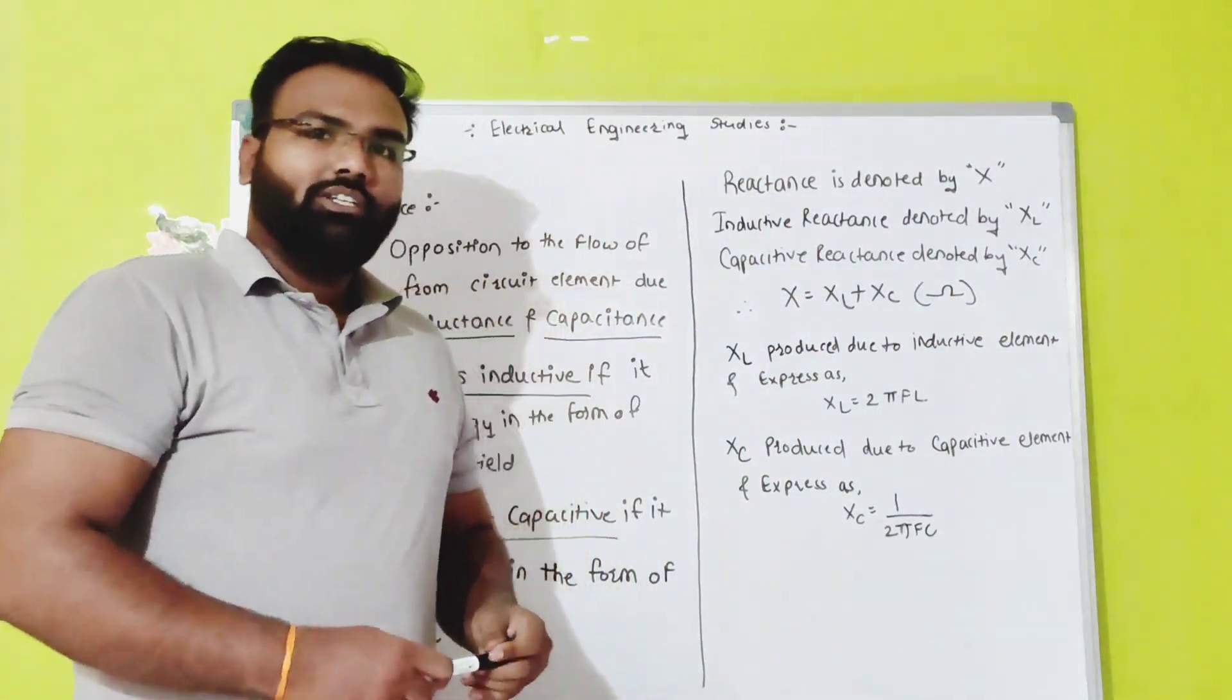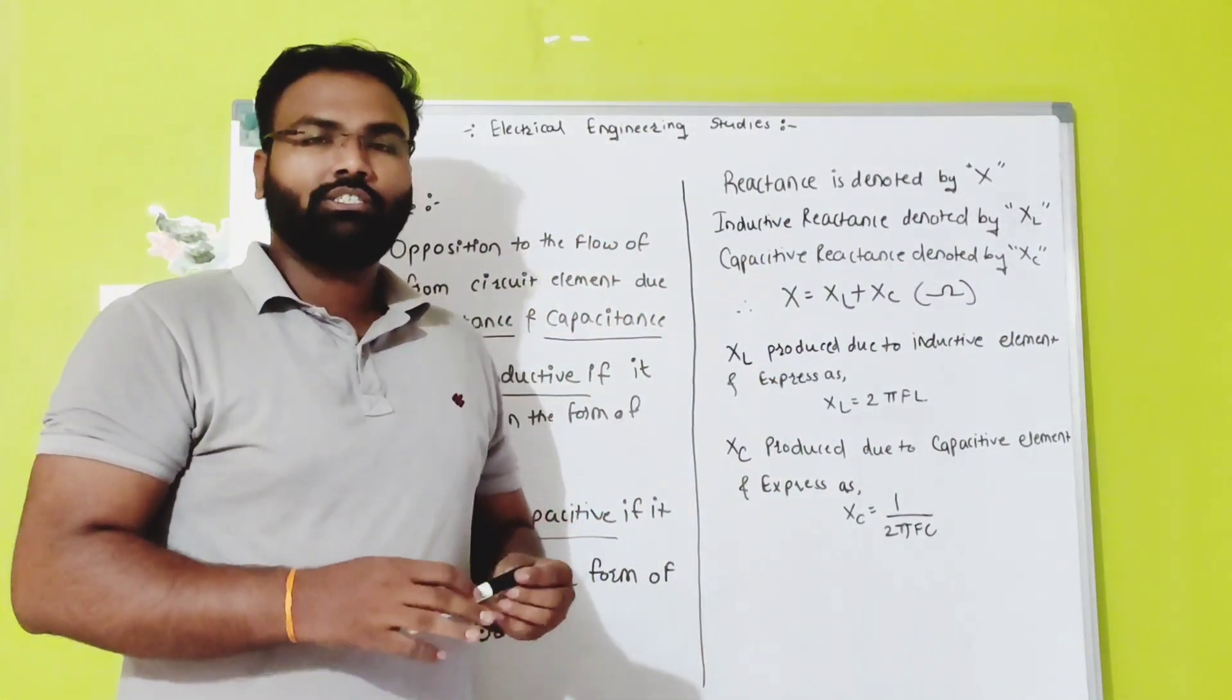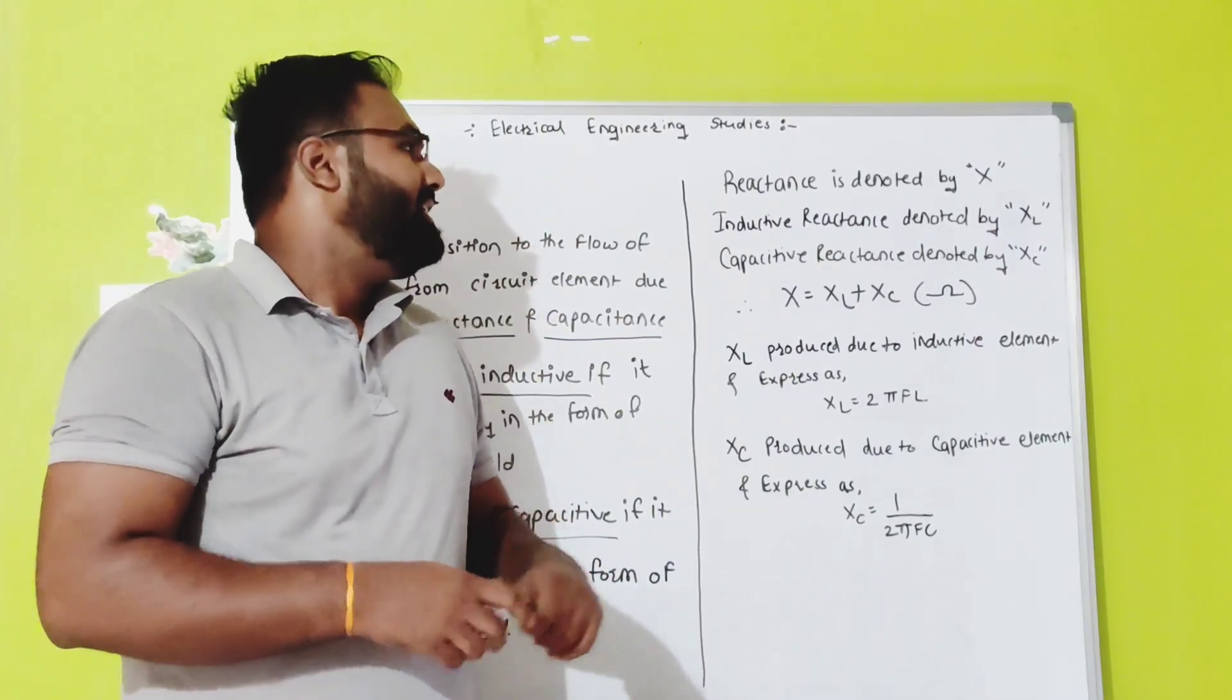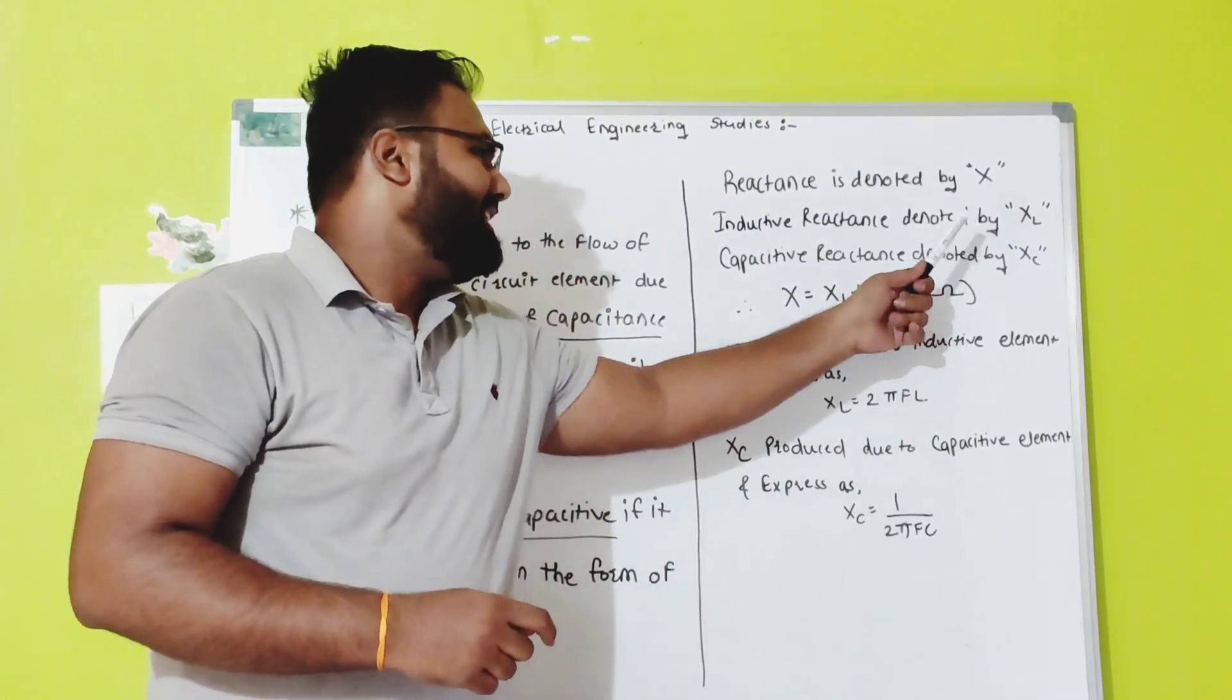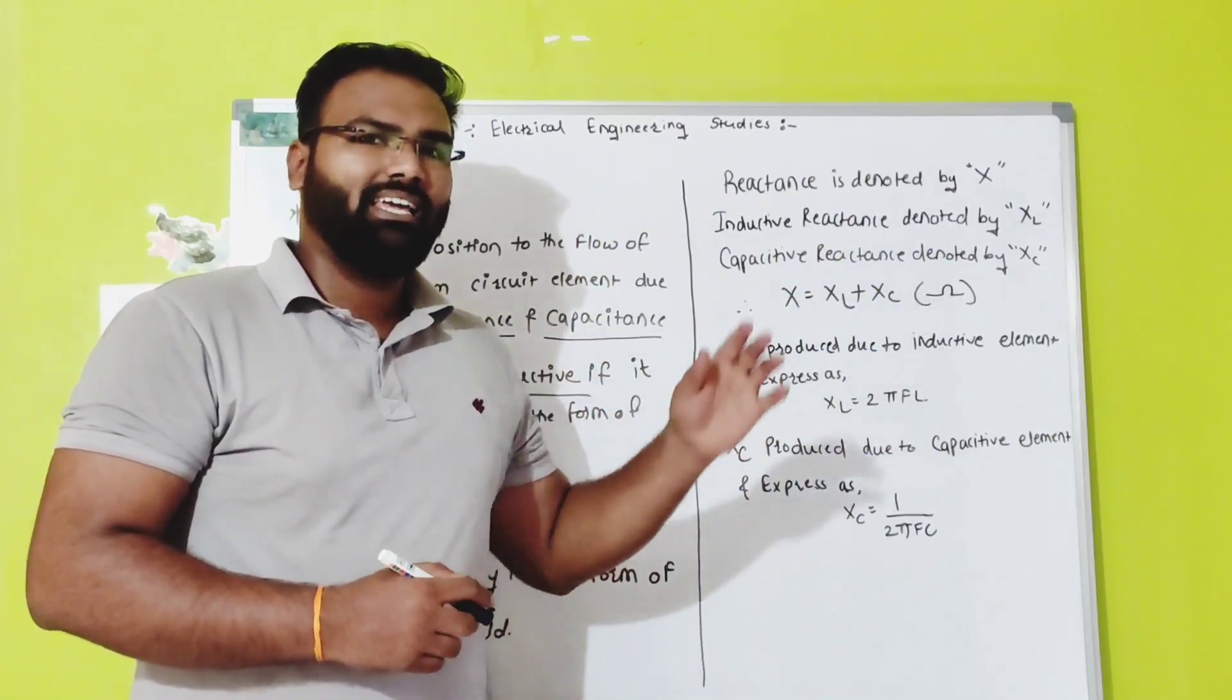Now, reactance is denoted by X. It is denoted by X. And similarly, inductive reactance is denoted by XL and capacitive reactance is denoted by XC.